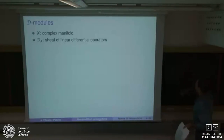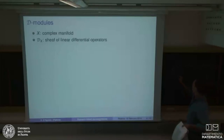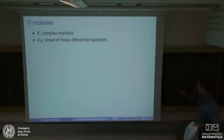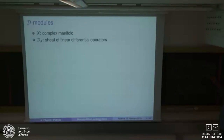In local coordinates Z=(Z₁,...,Zₙ) on X, an element of this ring is simply a differential operator — a finite sum using multi-index notation of some holomorphic coefficient times holomorphic derivatives with respect to the variables. Alpha is a multi-index, and these coefficients are holomorphic, as for ODEs.